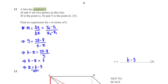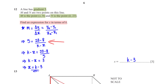A line has gradient 5. M and N are two points on this line: M is the point (x, 8) and N is the point (k, 23). Find an expression for x in terms of k. The gradient equals (y2 minus y1) over (x2 minus x1), so 5 equals (23 minus 8) over (k minus x). This simplifies to x equals k minus 3.